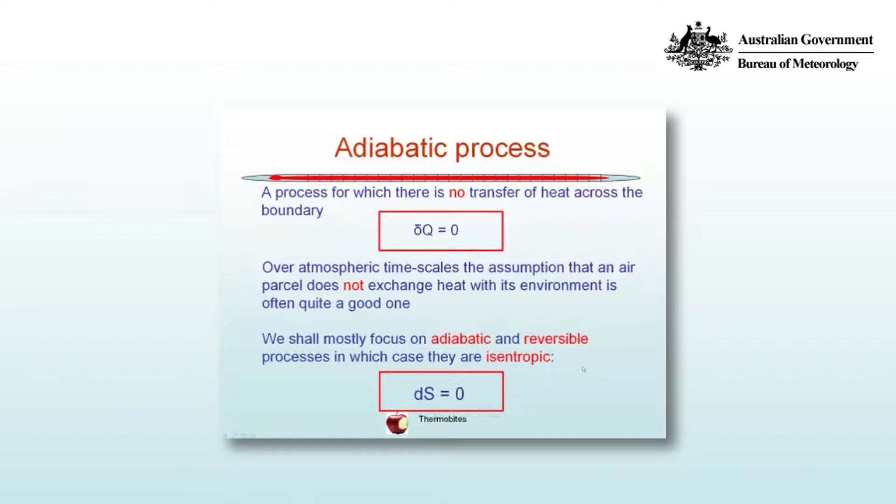Adiabatic process. An adiabatic process is a process for which there is no transfer of heat across the boundary between the system and its surroundings. Therefore, del Q is equal to zero.